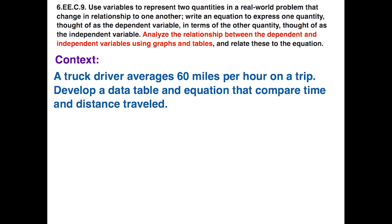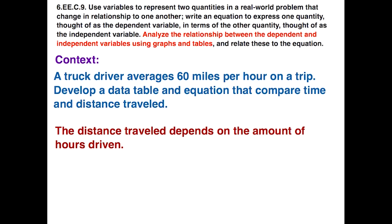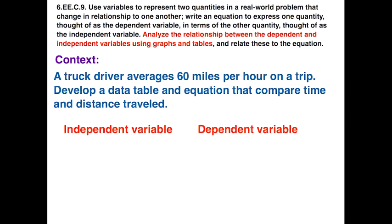Let's try a second context. A truck driver averages 60 miles per hour on a trip. Develop a data table and equation that compare time and distance traveled. The first decision, which is the dependent and which is the independent variable? Here the distance is going to depend on the amount of hours driven. So, the independent variable versus the dependent variable, our dependent is the distance traveled, and our independent is the number of hours traveled.